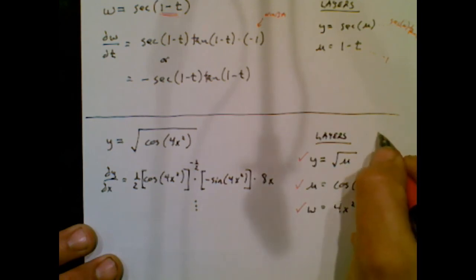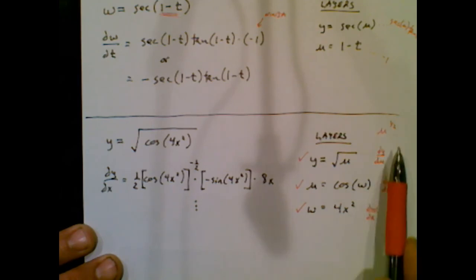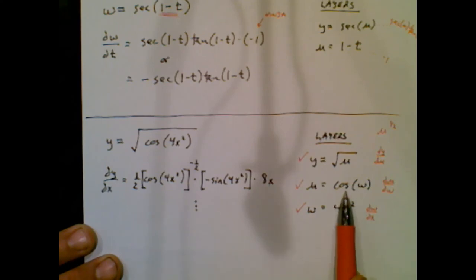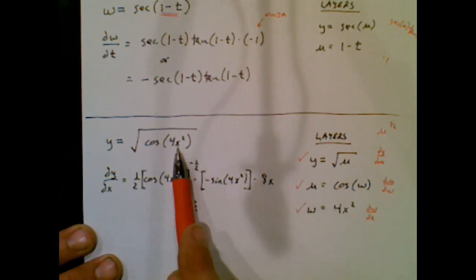Now I do the middle layer. That's a cosine of blah, blah, blah. Its derivative is negative sine of blah, blah, blah. And now I do the last layer, the innermost layer, which was a 4x squared. Its derivative is 8x.